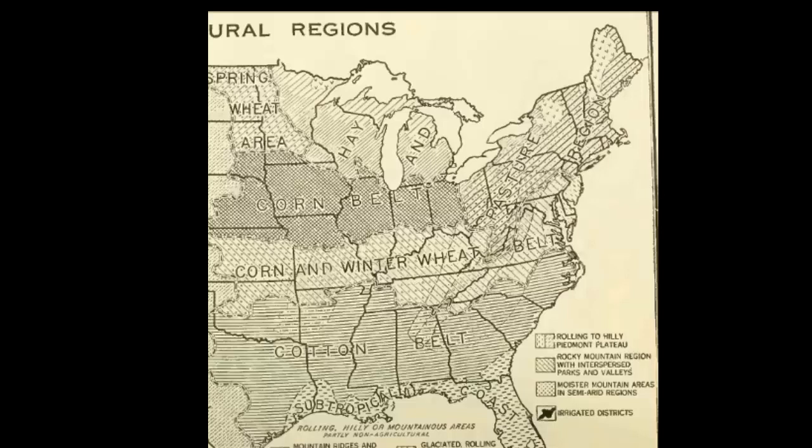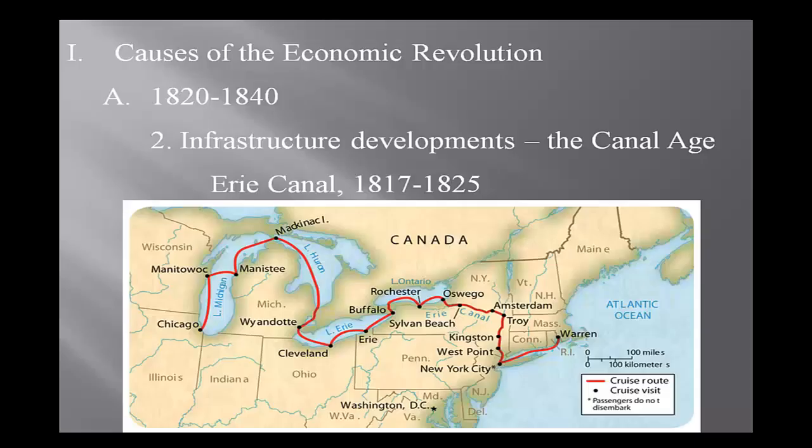Anybody driven through Illinois and Indiana? What do you see everywhere? Corn — 12-foot high corn everywhere, or soybeans. And if you go further north, you're going to find wheat fields. You'll find wheat over in the plain states like Nebraska and Kansas. This becomes a bread basket not only of America but then ultimately of the world.